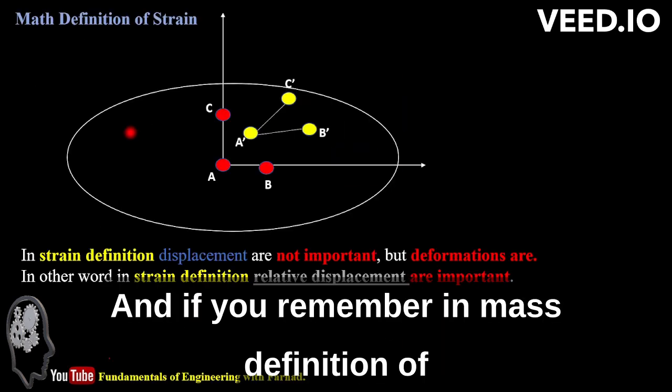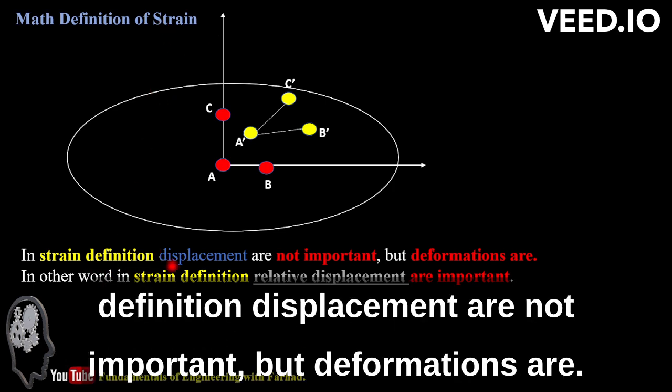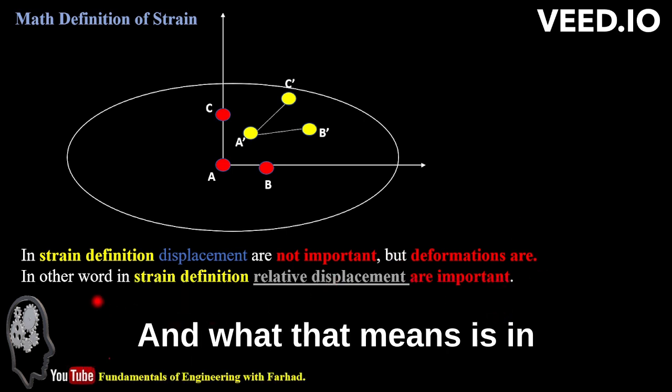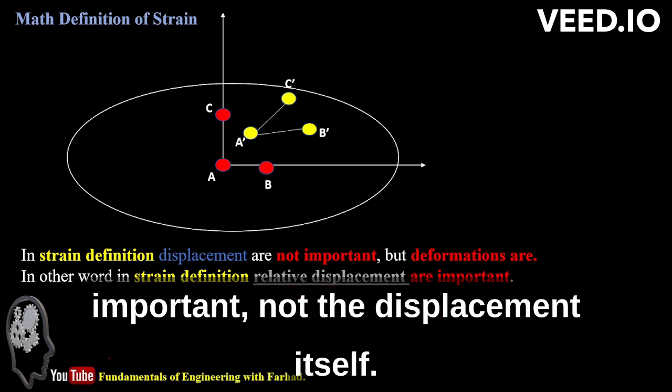If you remember in math definition of strain, we can say in strain definition, displacements are not important, but deformations are. And what that means is, in strain definition, relative displacements are important, not the displacement itself.